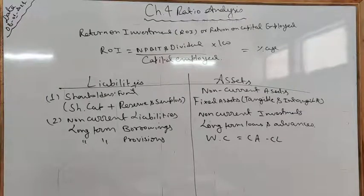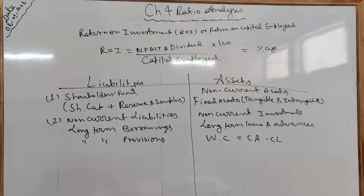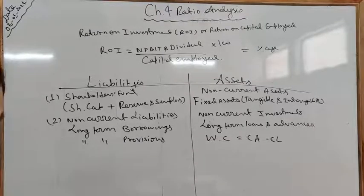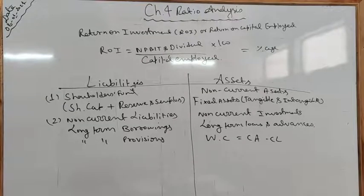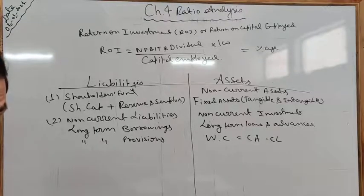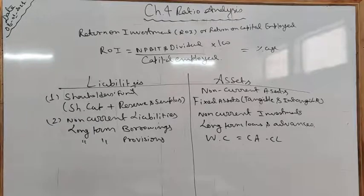Objective and significance of ROI: this ratio is calculated to measure the overall performance and profitability of the enterprise. It measures how efficiently the resources of the business are used. Return on capital employed is a clear measure of profitability, allowing performance comparison across industries. An enterprise should have a satisfactory ratio, assessed by comparing with past years' ratios, ratios of similar enterprises, or the industry average.